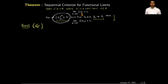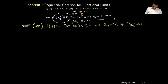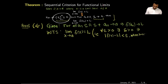To prove the backward direction, given is: for all sequences a_n in the domain such that a_n converges to a, the sequence f(a_n) also converges to l. We want to show that the limit of f(x) as x approaches a equals l — equivalently, for all epsilon positive there exists delta positive so that |f(x) - l| < epsilon when |x - a| < delta.